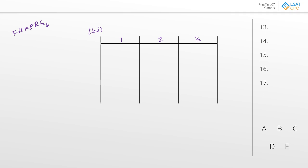One thing worth noting is the minimum spacing requirements. The different sections are going to go once, which is pretty standard, but every single aisle does have to have something there. So there's a minimum of one each — that means three spots are kind of reserved, and we have three extra spaces that are going to bounce around. From there, let's take a look at the rules.